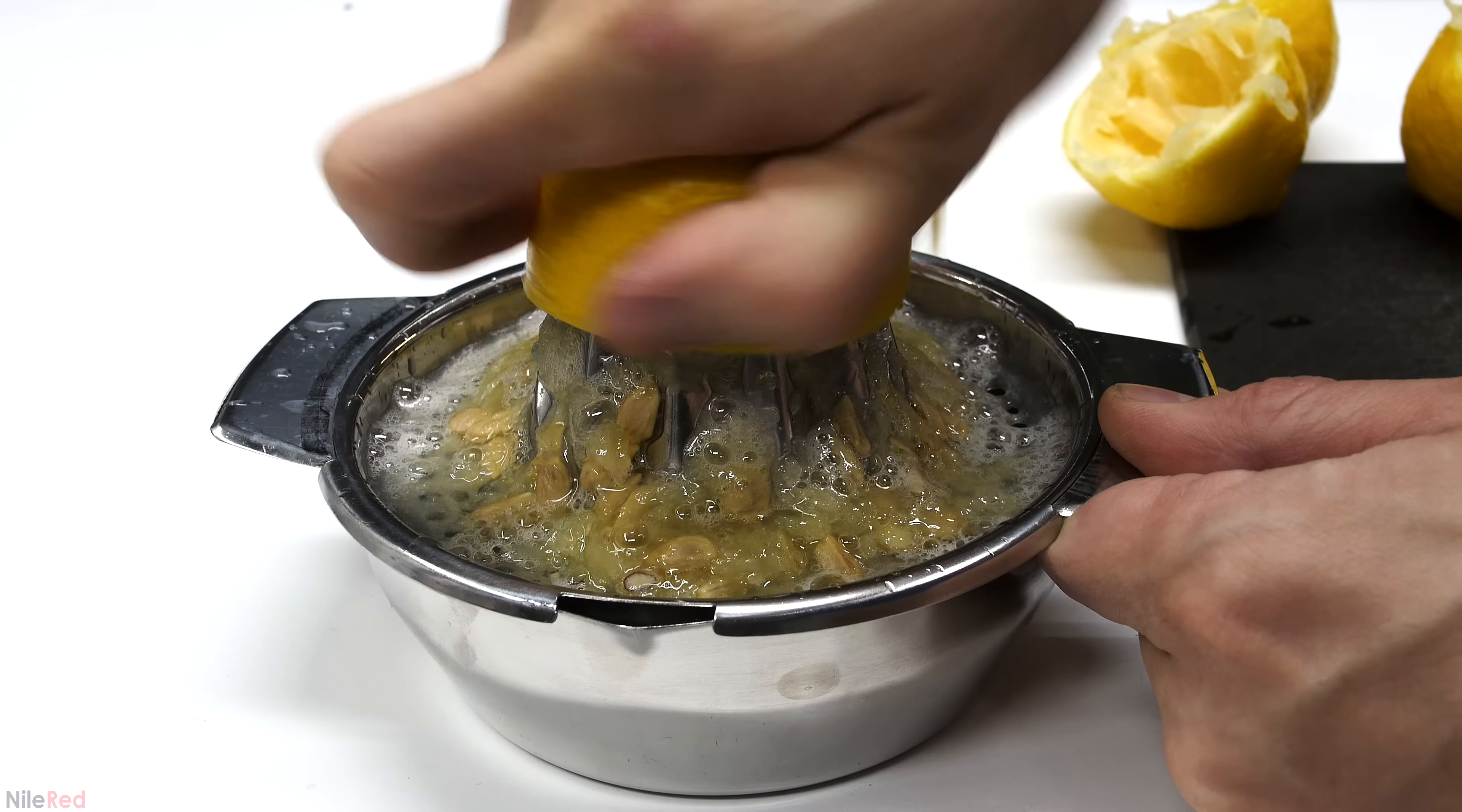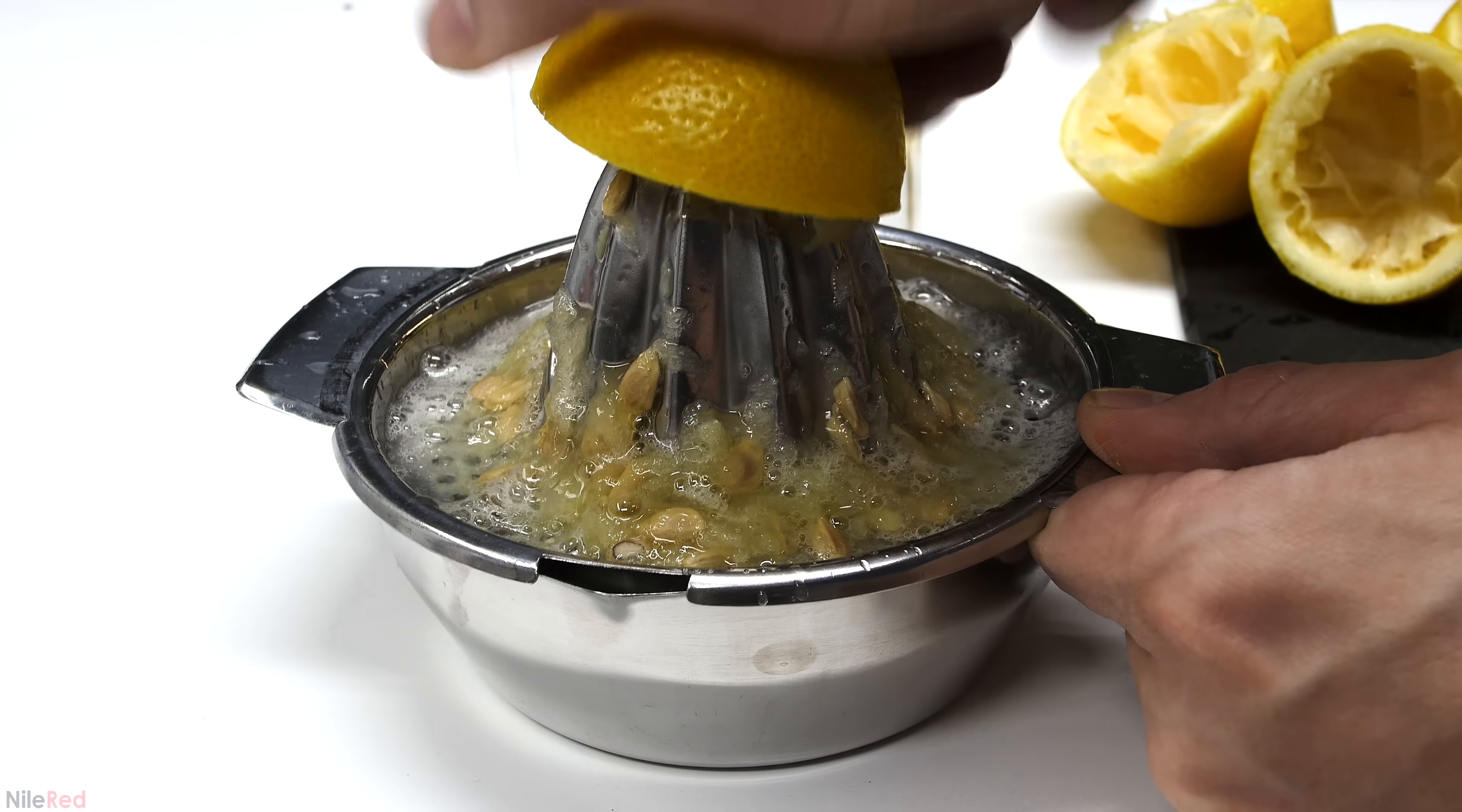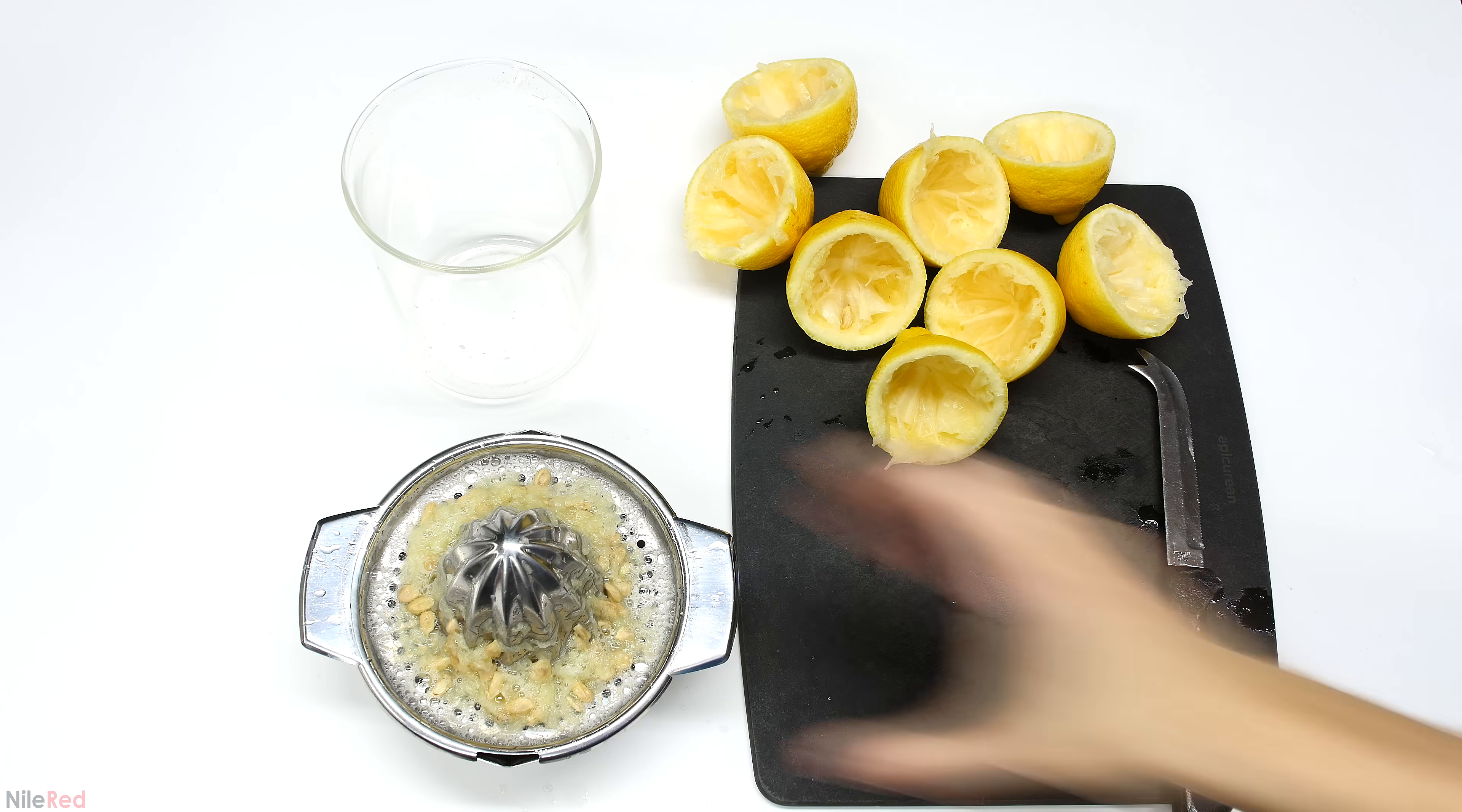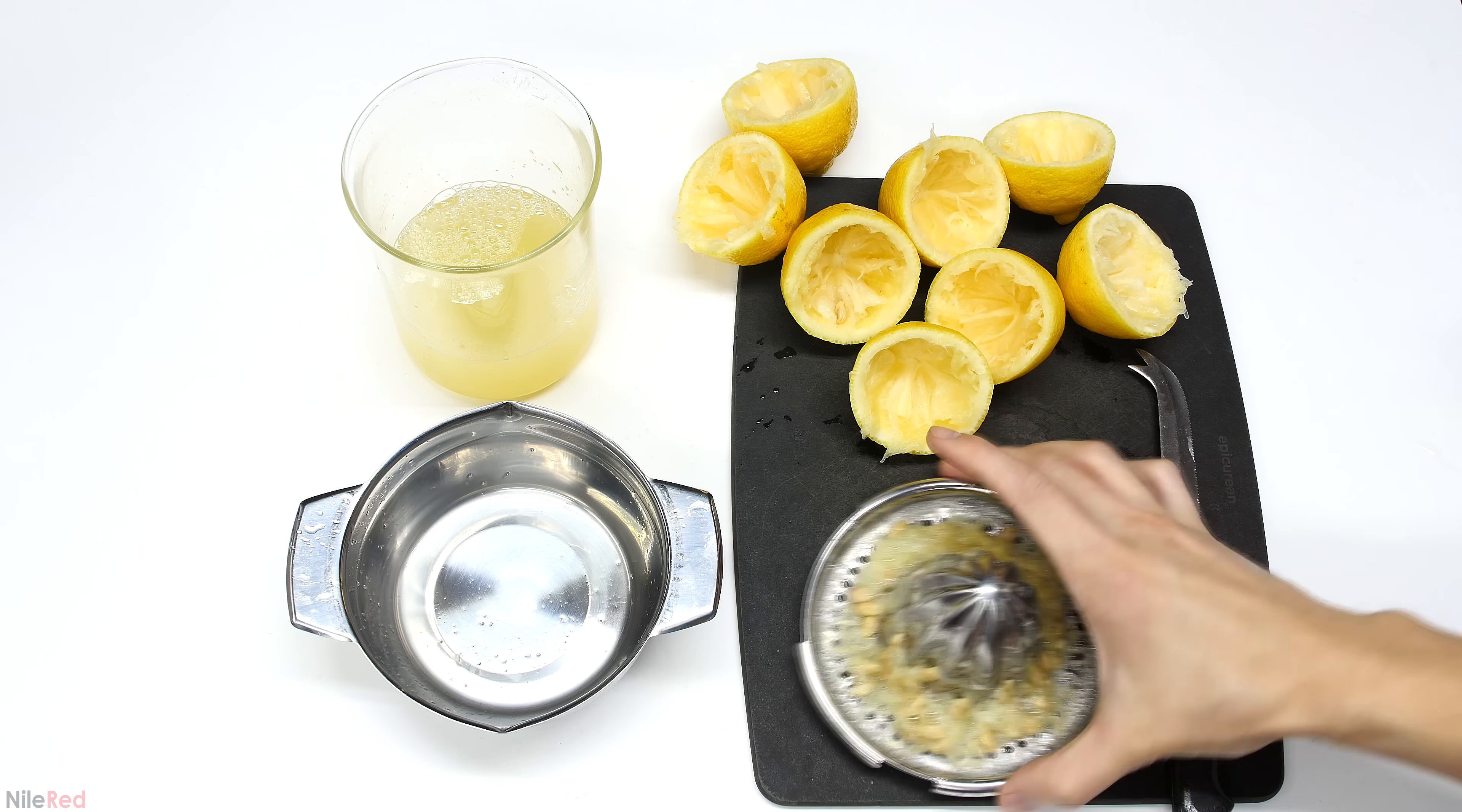The first step is to remove the juice from all of the lemons. I did this manually by chopping each lemon in half and then juicing it like you see here, but there might be an automated way to do this. I removed the juice from about four lemons and at this point my juicer was full, so I had to empty it into a beaker.